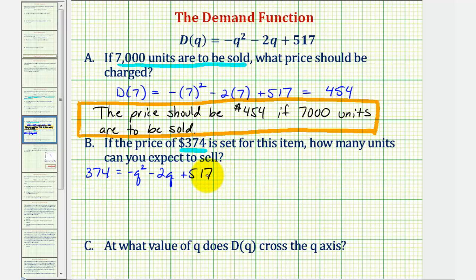Because we have a quadratic equation, let's set this equal to zero and see if we can factor it. Because we want the leading coefficient to be positive, let's move these three terms to the left side by adding Q squared to both sides, adding 2Q to both sides, and subtracting 517 from both sides. This gives us Q squared plus 2Q, and then 374 minus 517 would be negative 143. So we have minus 143 equals zero.